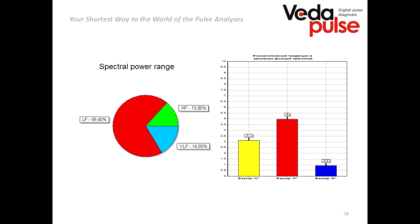Sometimes you can see a situation on the pie chart where all three colors are almost equal — low frequency, high frequency, and very low frequency waves all having nearly equal shares, about 33% each. We call this state tridosha, meaning all three doshas are in equilibrium and equal. It is quite a rare case, but it can occur.